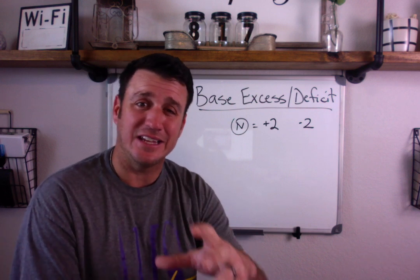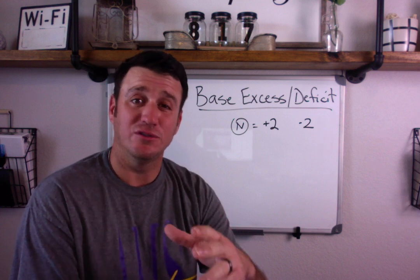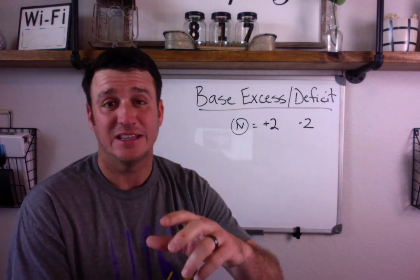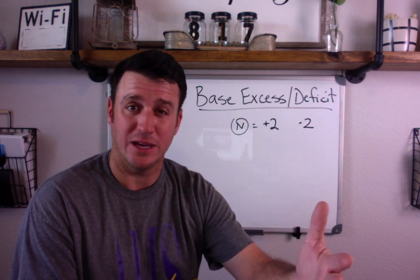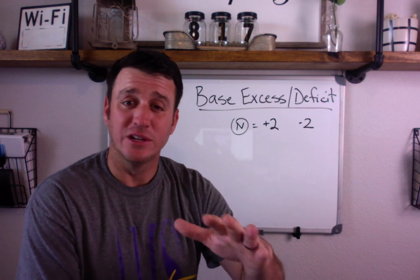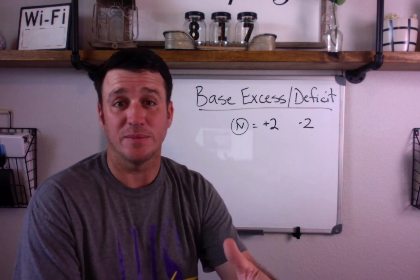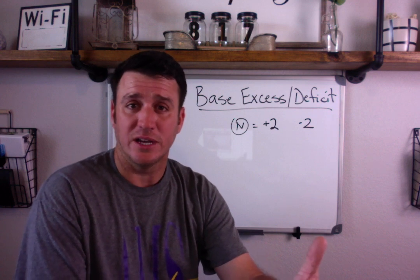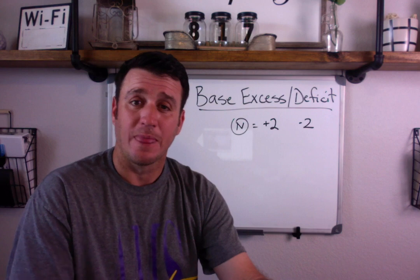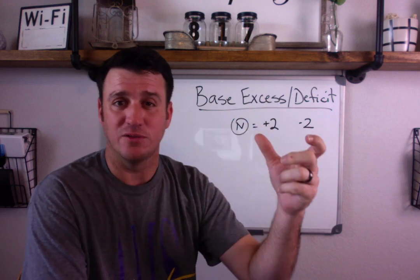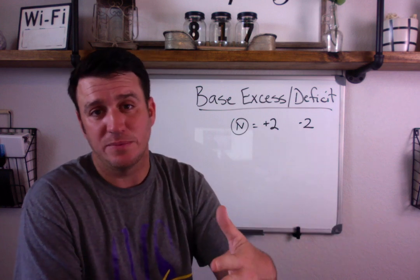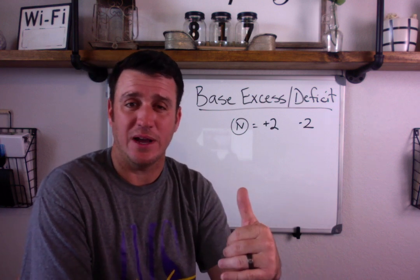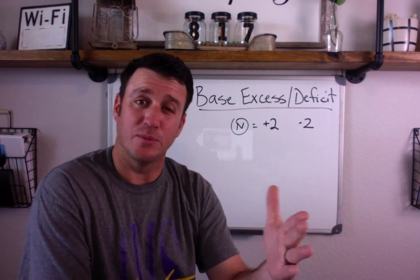What base excess tells you is: if you normalize CO2 to 40, what is your excess base or what is your deficit of base that you would need to normalize your pH? This tends to be a problem area for respiratory therapy students because I don't think it's taught well at the surface level — we primarily just talk about bicarb. If you look at the bicarb number in relationship to everything else, you can reasonably grasp if you have too much or too little base.